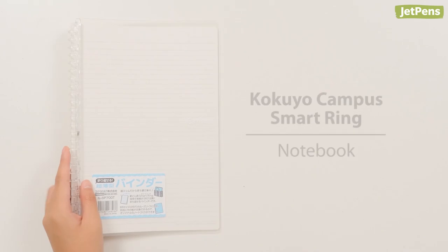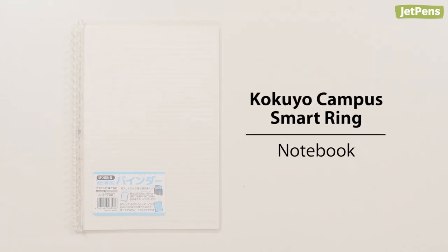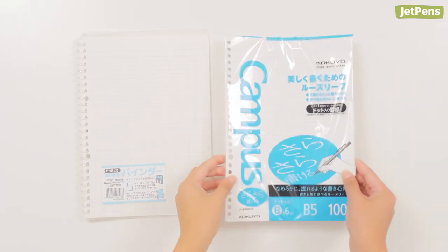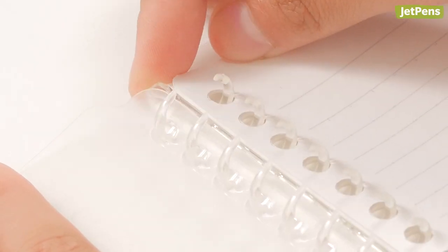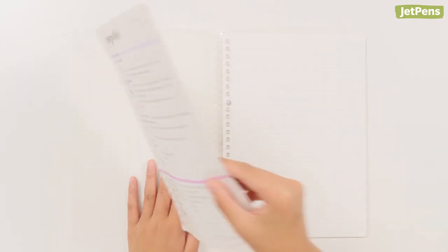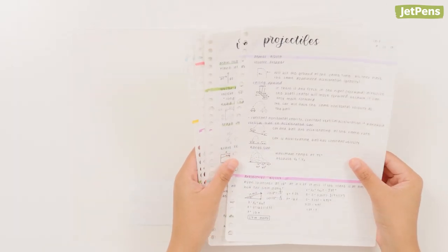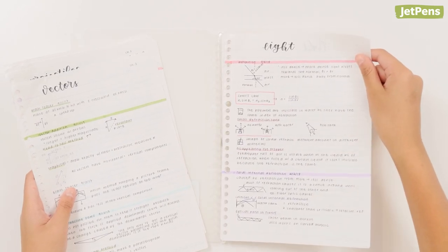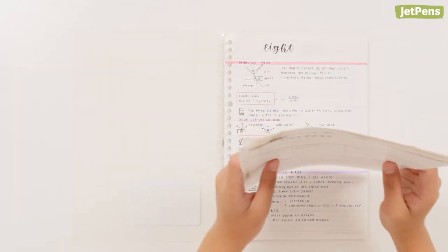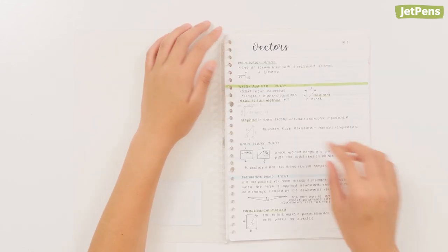To go with the Kokuyo Campus paper, I chose the Kokuyo Campus Smart Ring Binder. This notebook already comes with 10 sheets of Kokuyo Campus paper. The Smart Ring isn't a traditional notebook; it's more like a compact binder. The rings of this notebook can be opened so I can reorder, add in, or take out notes. Since it's so light and compact, it's as easy to carry around and write in as a notebook.